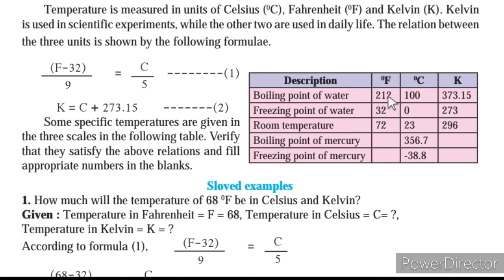In the chart, the boiling point of water is 100 degree Celsius. To convert to Kelvin, we add 273.15, giving the corresponding Kelvin value. To convert 100 degree Celsius into degree Fahrenheit, we use the formula. Likewise, other values are to be confirmed and the gaps are to be filled.